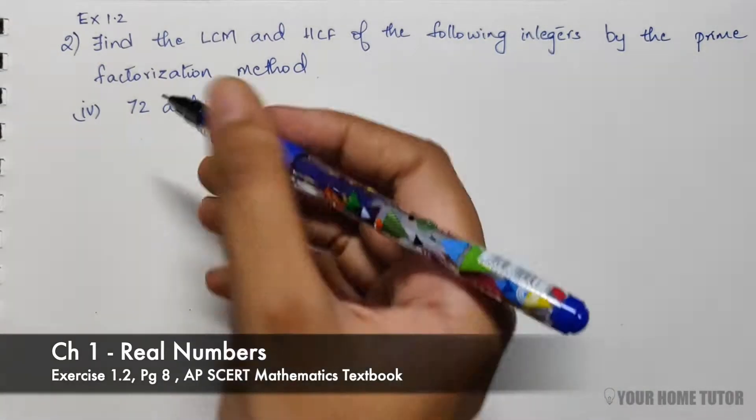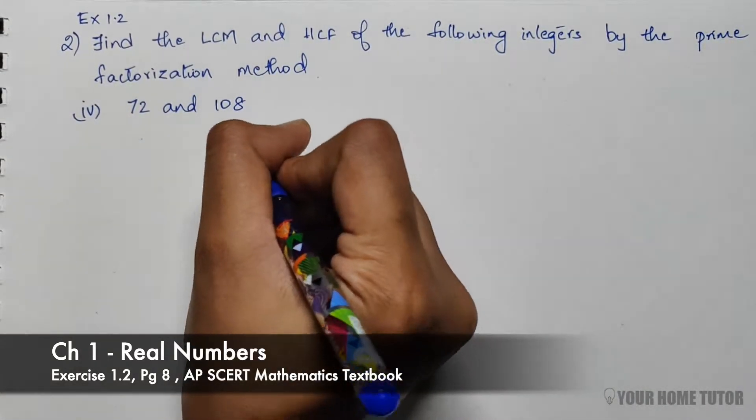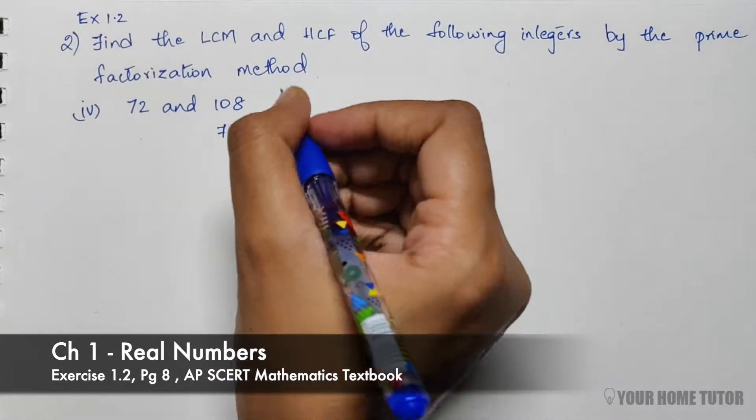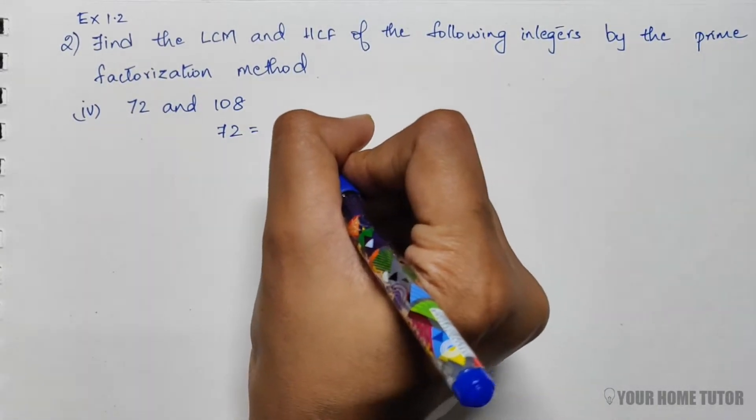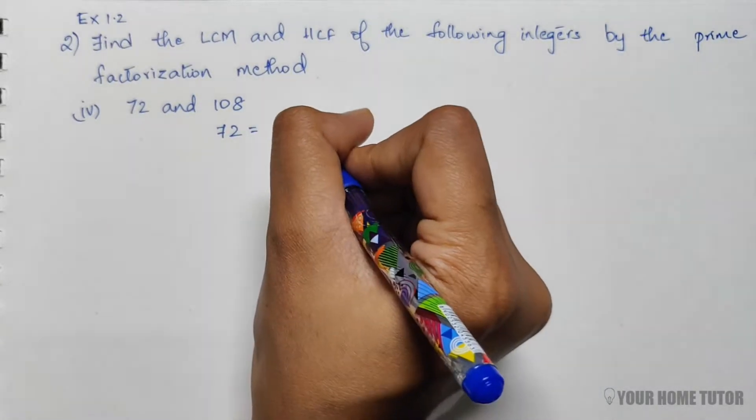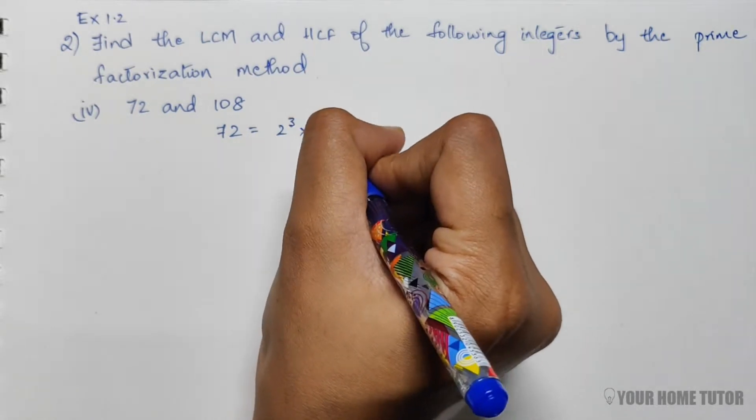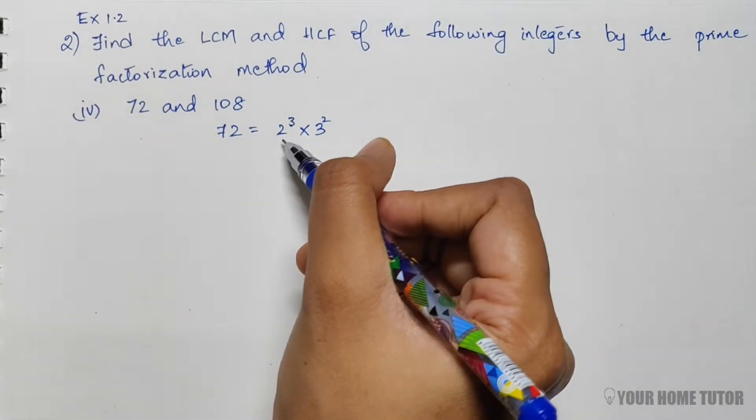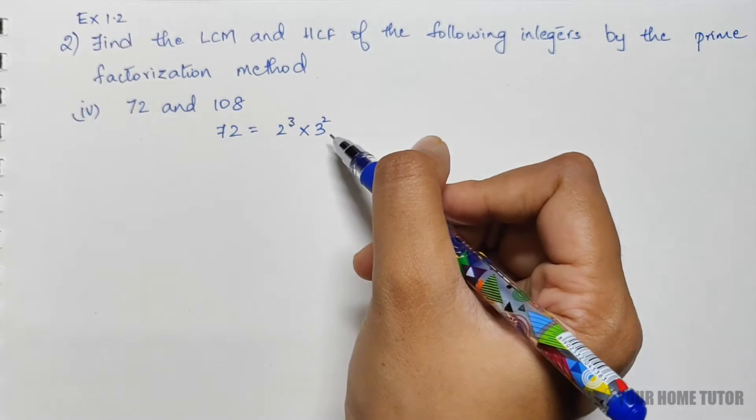So 72's prime factors are 2³ × 3². 2³ is 8, and 3² is 9. 8 × 9 is 72.